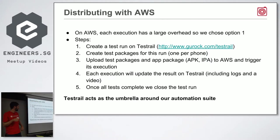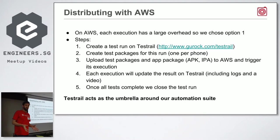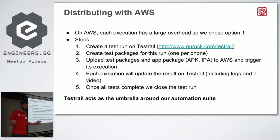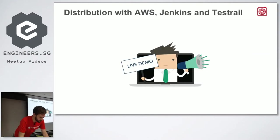To handle reporting across multiple executions, we already use TestRail as a test management solution. We use it as an umbrella over all test executions: we create one test run on TestRail, create all the test packages, upload our application, and trigger multiple executions - currently four or five. These run simultaneously and report results back to the same TestRail run. Once all tests complete, we close the run and it's done.